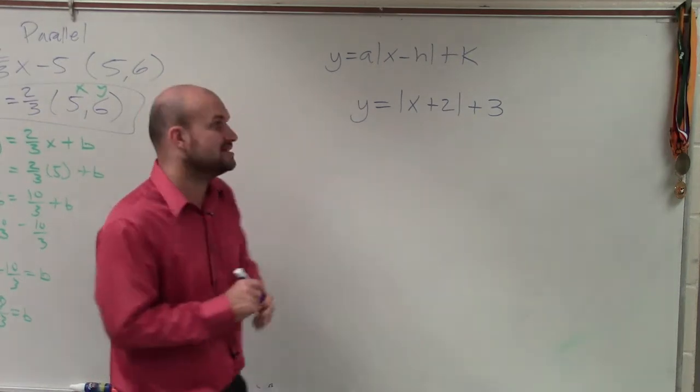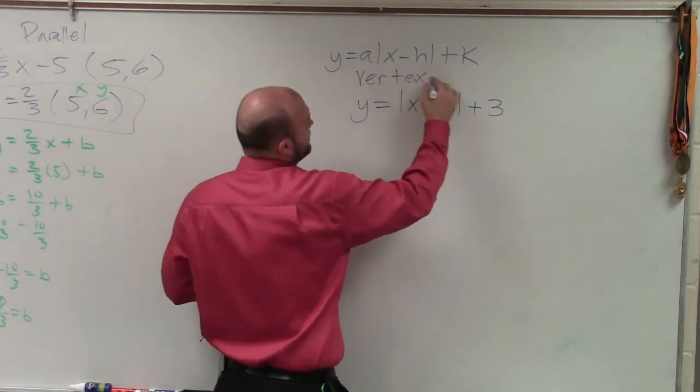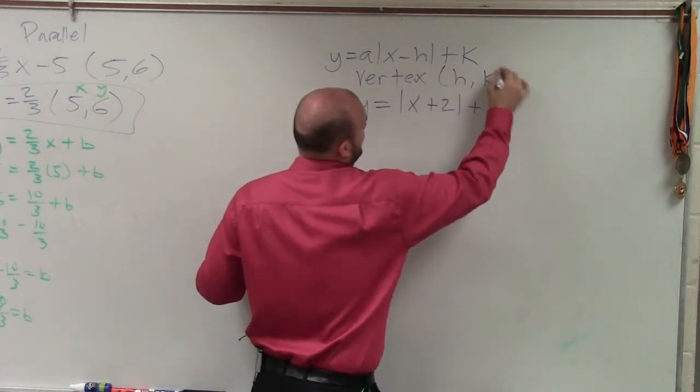Now, to determine how it does that, we need to use what we call the vertex. And the value of the vertex is the coordinate h comma k.